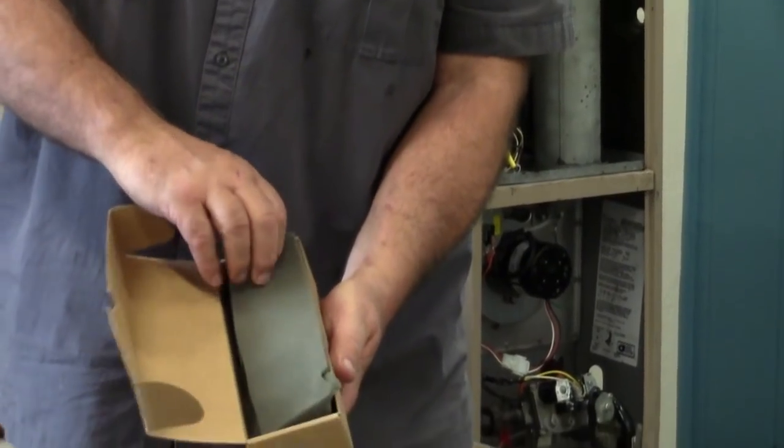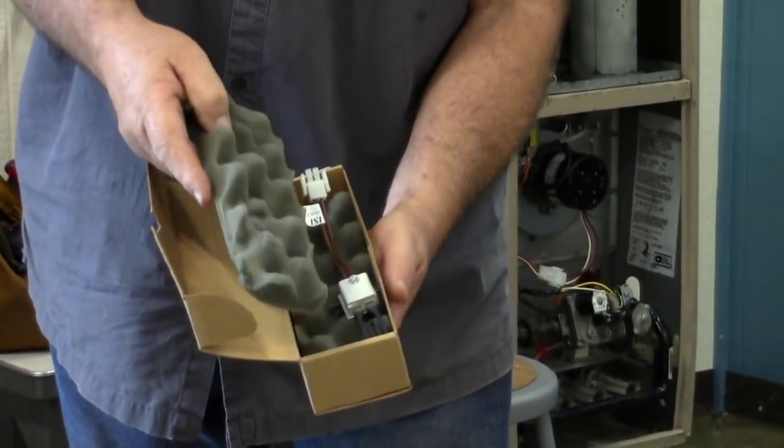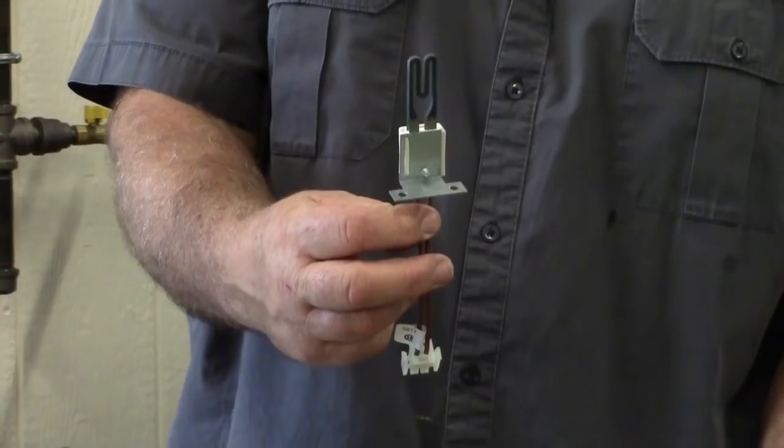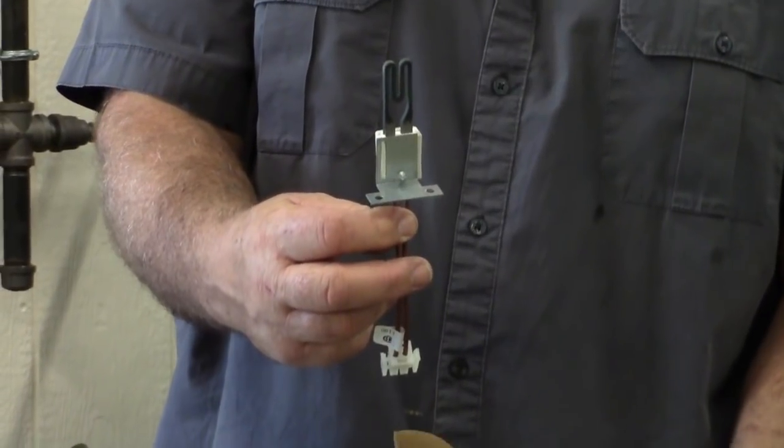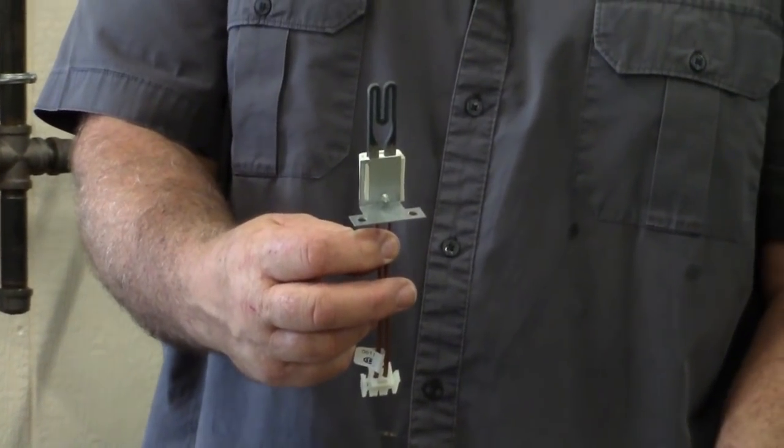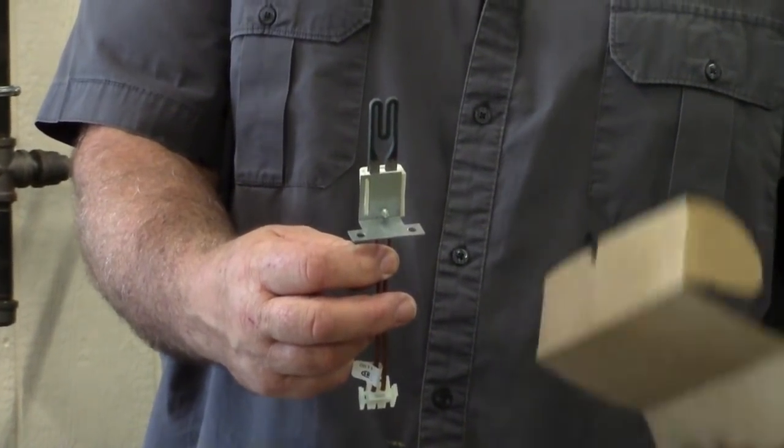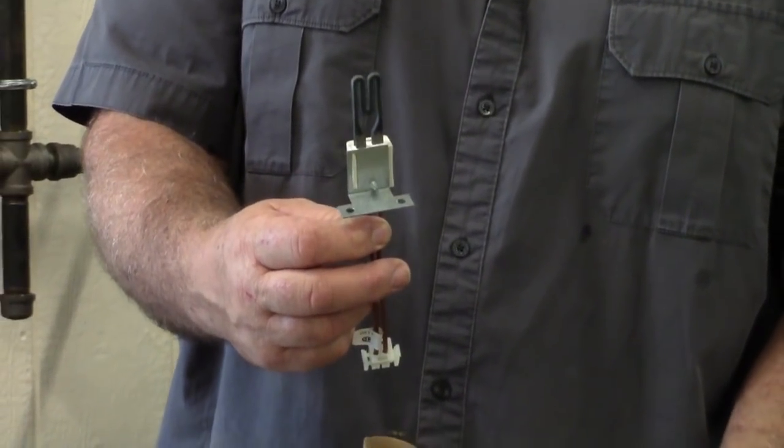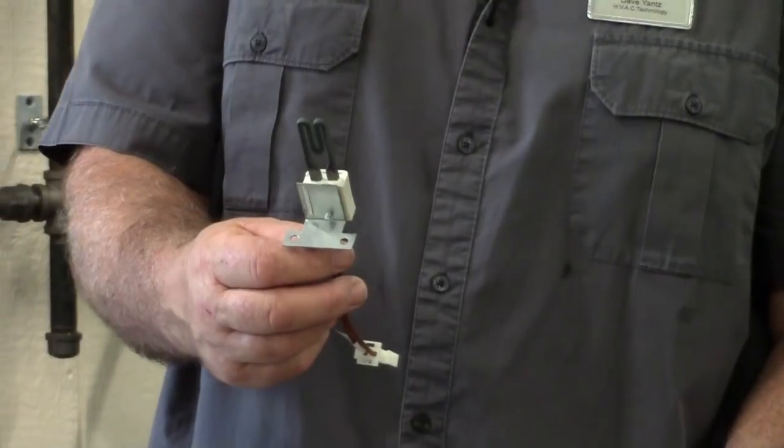The second style of igniter is again wrapped in very well foam packed, but this one here is a little different shape. Both igniters do the same thing - they glow bright red and when the gas is turned on, it goes across here and this is what ignites the gas so we have a flame. So it'll be one of these two styles.